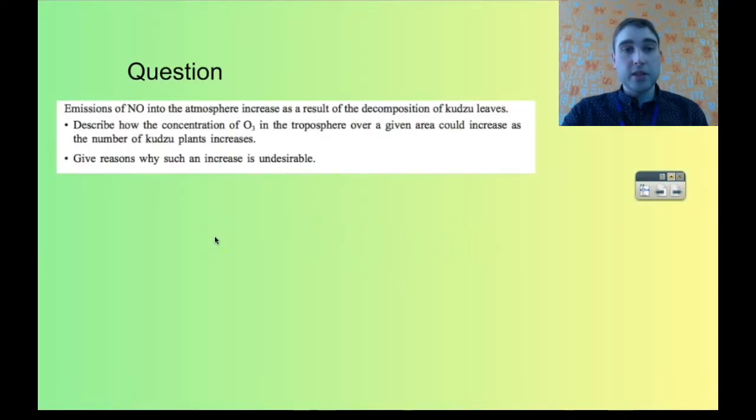So here's an example question. It says nitric oxide in the atmosphere increases as a result of the decomposition of kudzu leaves. Describe how the concentration of ozone in the troposphere over a given area could increase as the number of kudzu plants increases, and give reasons why such an increase is undesirable.